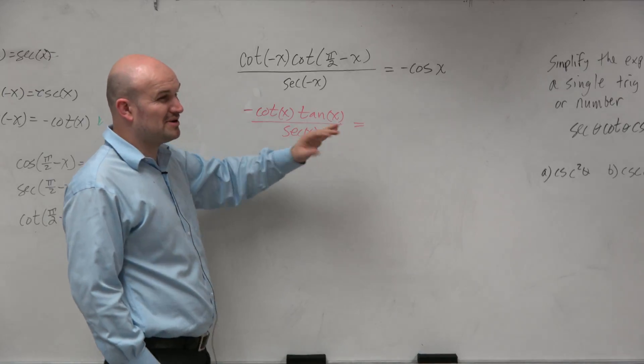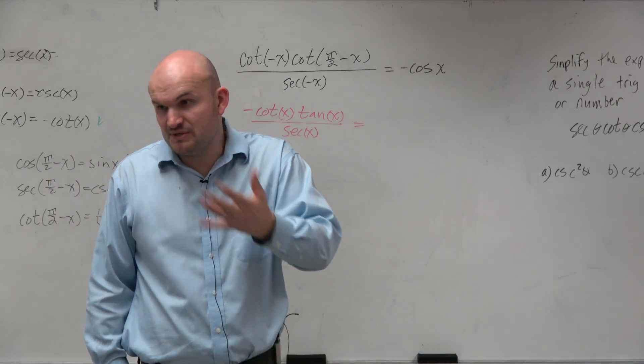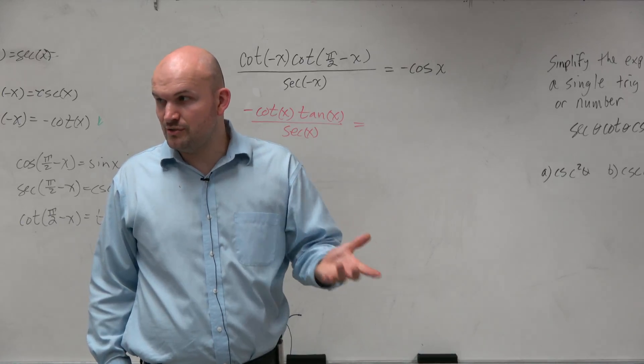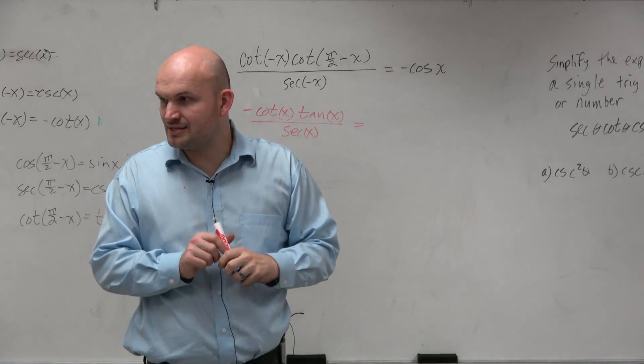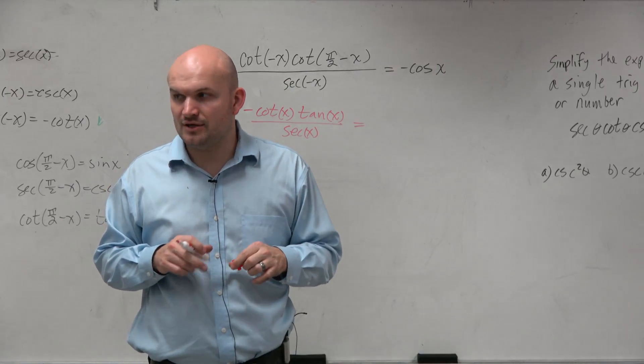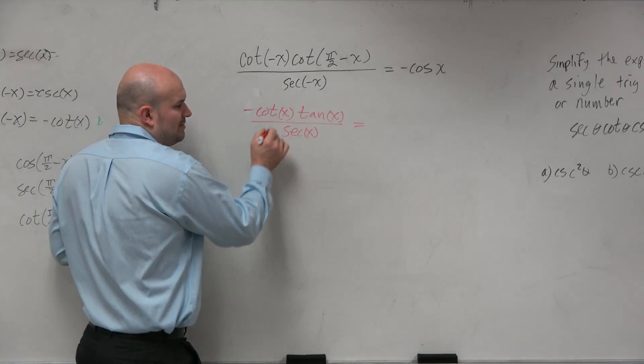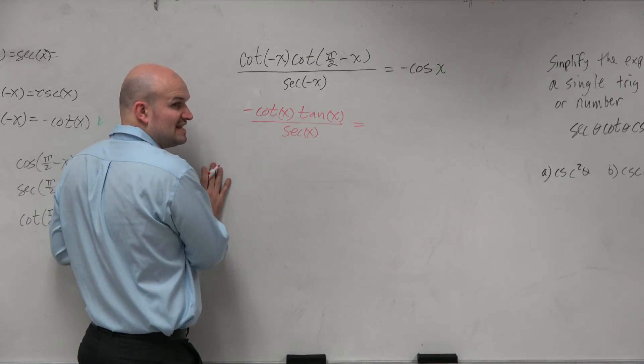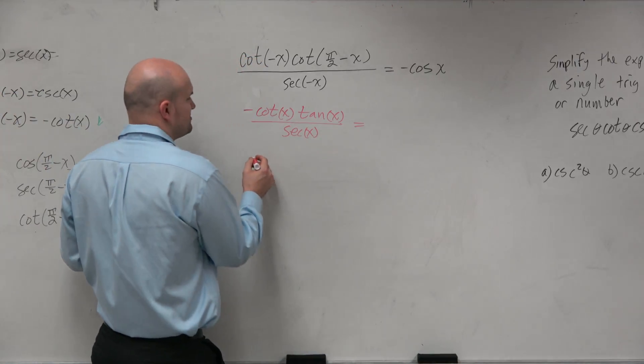Right here, some of you guys might say, I still don't know what to do here. We see the identities, we use them on the board, but then what do I do? So another helpful hint - one thing you can always do is rewrite your trigonometric function in terms of sines and cosines, because everything I have here can always be written in terms of sines and cosines.